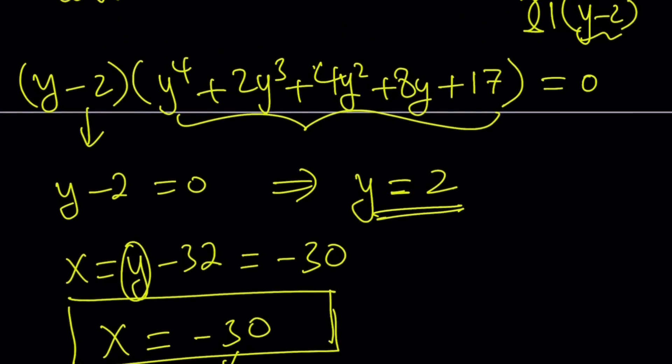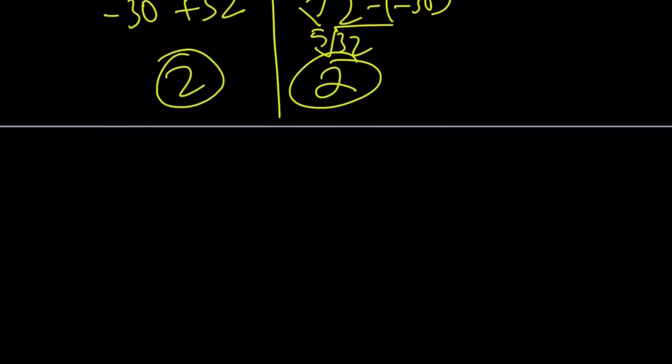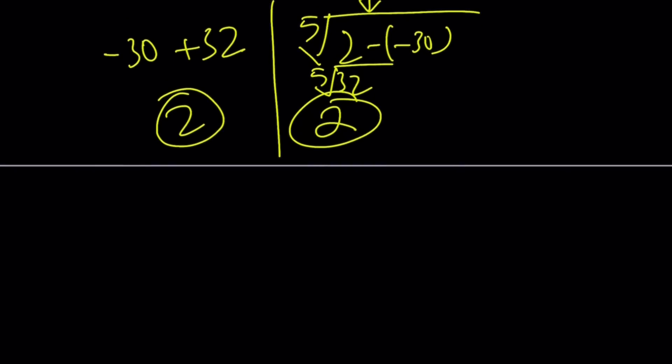We didn't do like squaring both sides or anything crazy like that that would introduce extraneous solutions. So we're good. X equals negative 30 is a solution, but let's talk about why that is the only real solution. If you want to find the complex solutions, be my guest. You can go ahead and solve this quartic equation. You can use Wolfram Alpha or any other tool. I don't think you want to solve this using the quartic formula. It's going to be quite complicated and time-consuming. Almost nobody uses the quartic formula. Maybe cubic is kind of fun, but quartic is no fun.